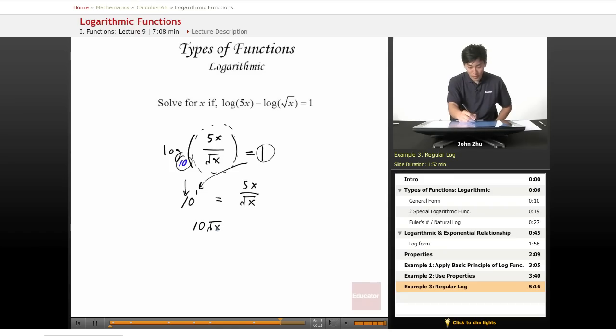In other words, 10 times square root of x equals 5x. And all we have to do is square both sides to get rid of the square root term. So let's square both sides.